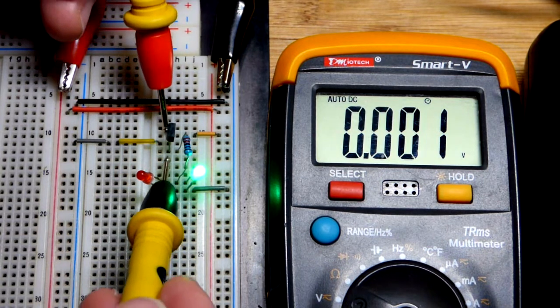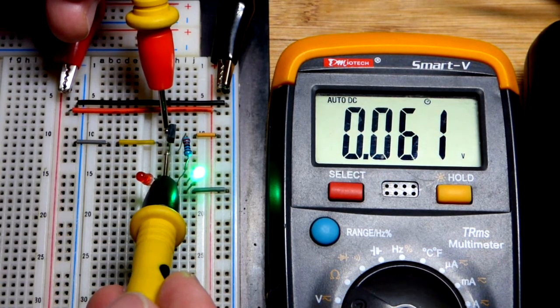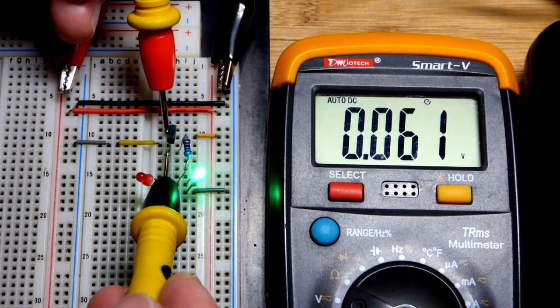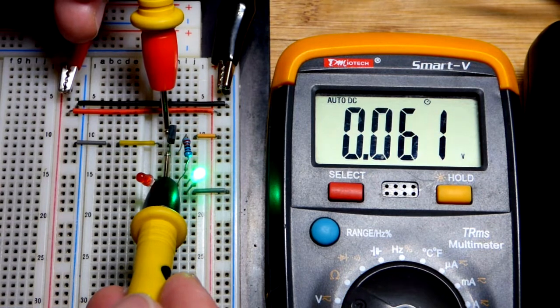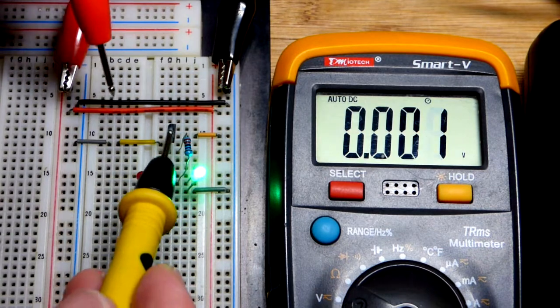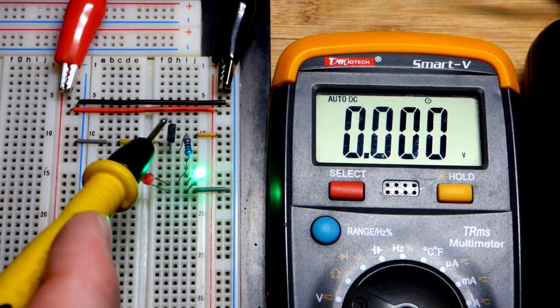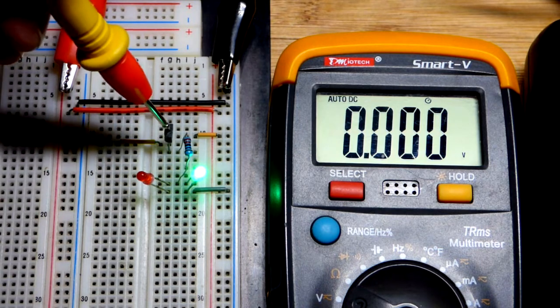Instead of losing about 0.6 volts across a diode, here is our diode—the transistor wired as one—at 0.06 volts. Instead of about 0.6 volts for a silicon diode, 0.06 volts. We're dropping about a tenth of the voltage, which is just due to it having some resistance.